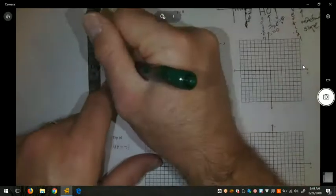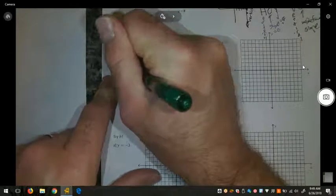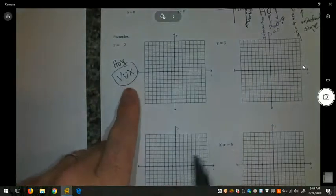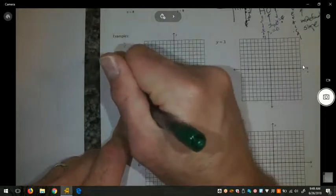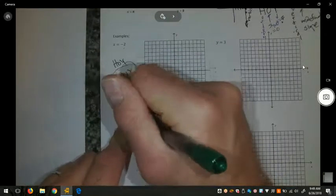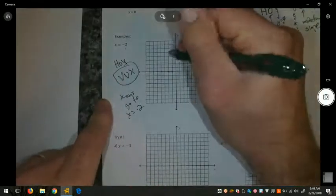So, here are some examples. x equals negative 2. Oivox. Okay? I have a vertical line at x equals negative 2. So, on my x-axis, go to x equals negative 2 and draw a vertical line.